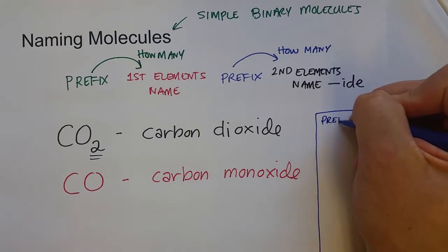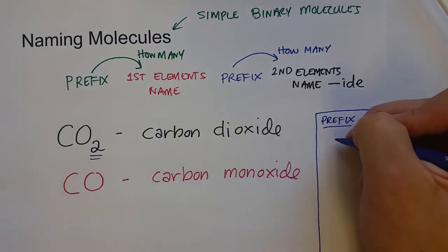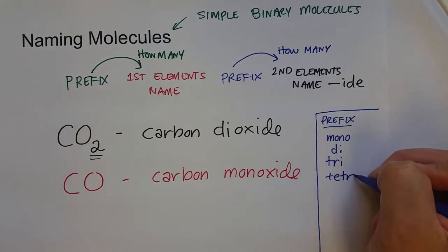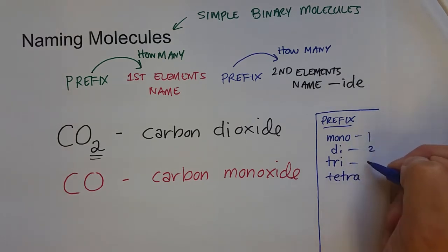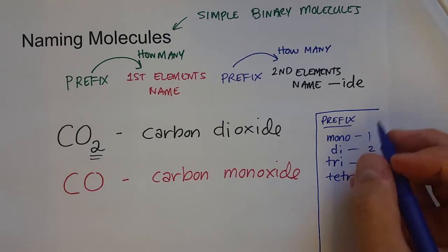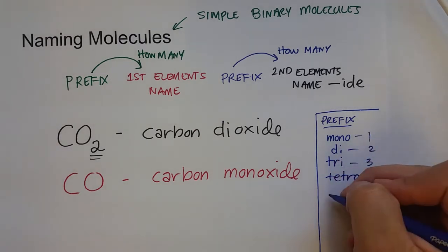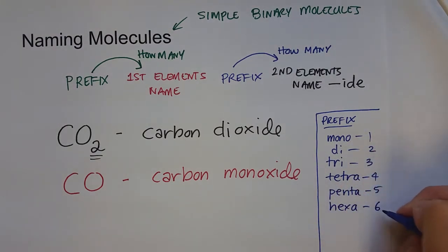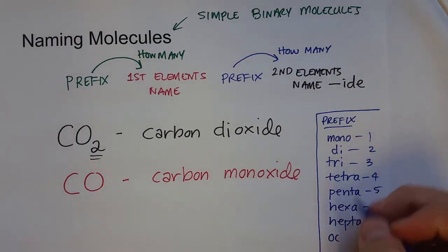What other prefixes might we use? Mono for one, di for two, tri for three. For four, we're actually going to use tetra. Think of tetrahedron or tetrapod for four. And then after that, it gets pretty simple. Think of your geometry prefixes. Five is penta, just like pentagon. Six is hexa. Seven is hepta. And eight is octo or octa.